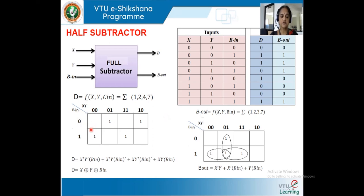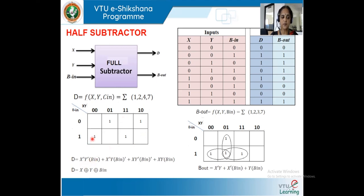We consider a three-variable K-map with X, Y, and B_in. The ones in the K-map are not adjacent to each other, so we cannot group them. The equation for D is: D = X̄ȲB_in + X̄YB̄_in + XȲB̄_in + XYB_in, which simplifies similarly to an XOR expression.